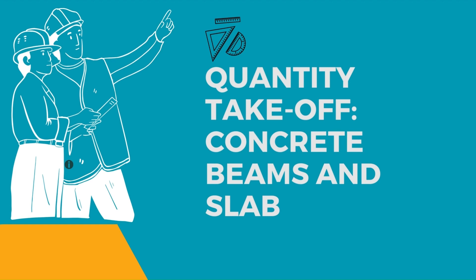In this three-part series, we've been systematically measuring the various components of a reinforced concrete frame. In the first video, we focused on the column bases, including measuring quantities for the excavation, backfilling, blinding, and concrete to the column bases. In the second part, we measured the different types of concrete columns, their associated formwork, and accounted for backfill material. In today's video, which is part three, we'll be quantifying the concrete beams, the concrete slab, and the associated formwork. So let's dive right in.